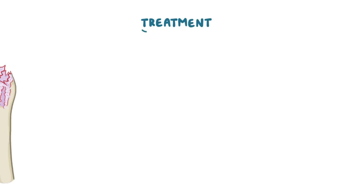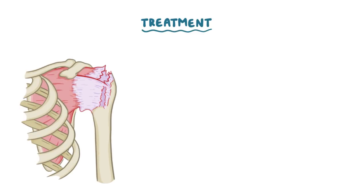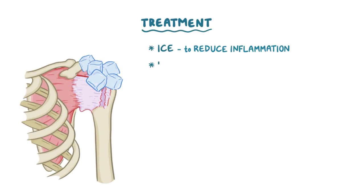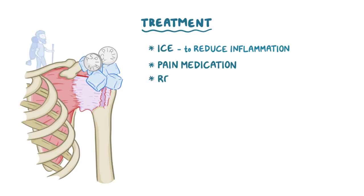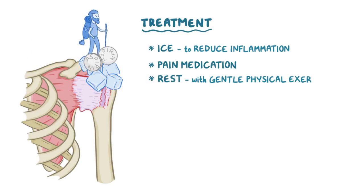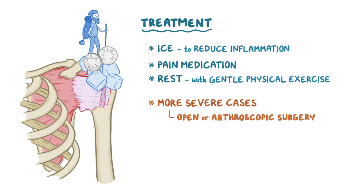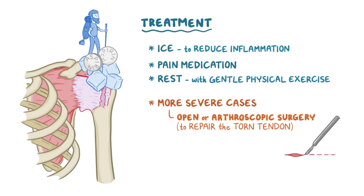The treatment of a rotator cuff tear begins with ice to reduce inflammation, pain medication, and rest with gentle physical exercise to prevent stiffening. In more severe cases, open or arthroscopic surgery may be needed to repair the torn tendon.